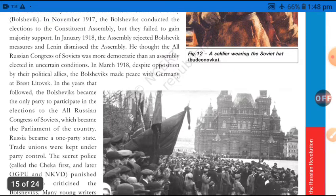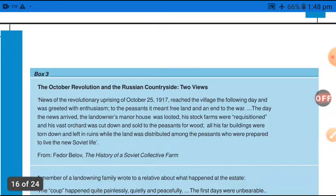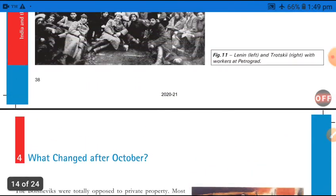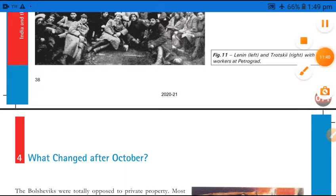This is a very important lecture covering what happened to the Bolsheviks and how they organized their powers. Today we read about the October Revolution. In the next lecture, I will tell you what changed after October, and you will be able to associate both topics. Thank you, students — have a good day ahead.